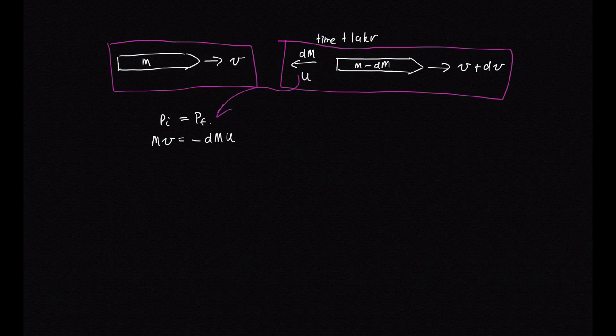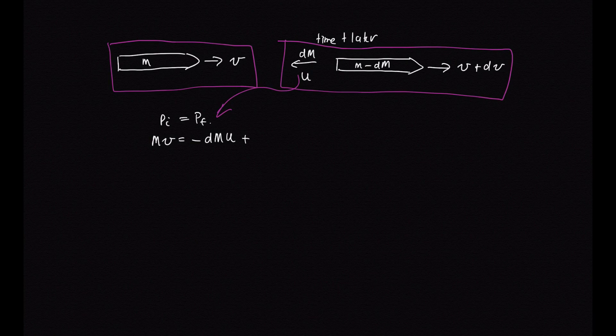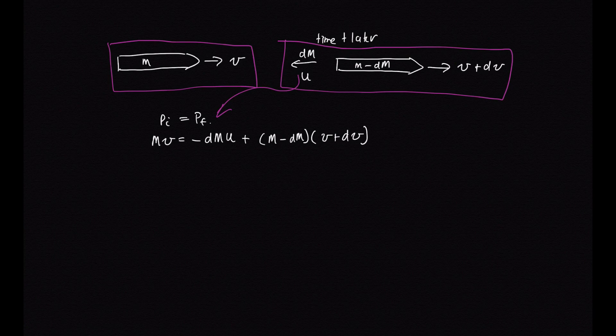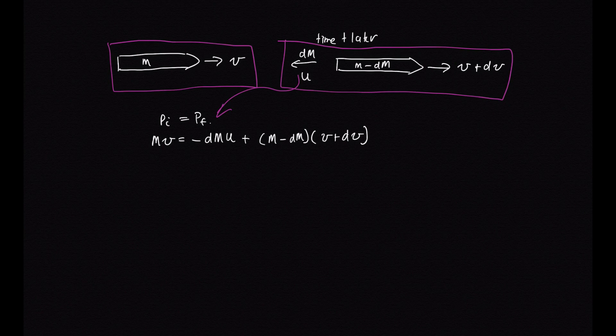So the momentum of the fuel is equal to minus dm u. And the rocket also has momentum going forwards. So the mass of the rocket is m minus dm, and the speed of the rocket is v plus dv. So this is the final momentum of the rocket fuel system.